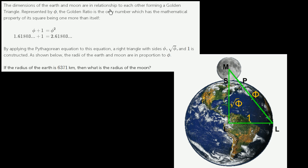The dimensions of the Earth and Moon are in relationship to each other, forming a golden triangle represented by phi. The golden ratio is the only number which has the mathematical property of its square being one more than itself. And there's a whole video on phi on the Khan Academy, and I suggest you watch it. It will give you chills.